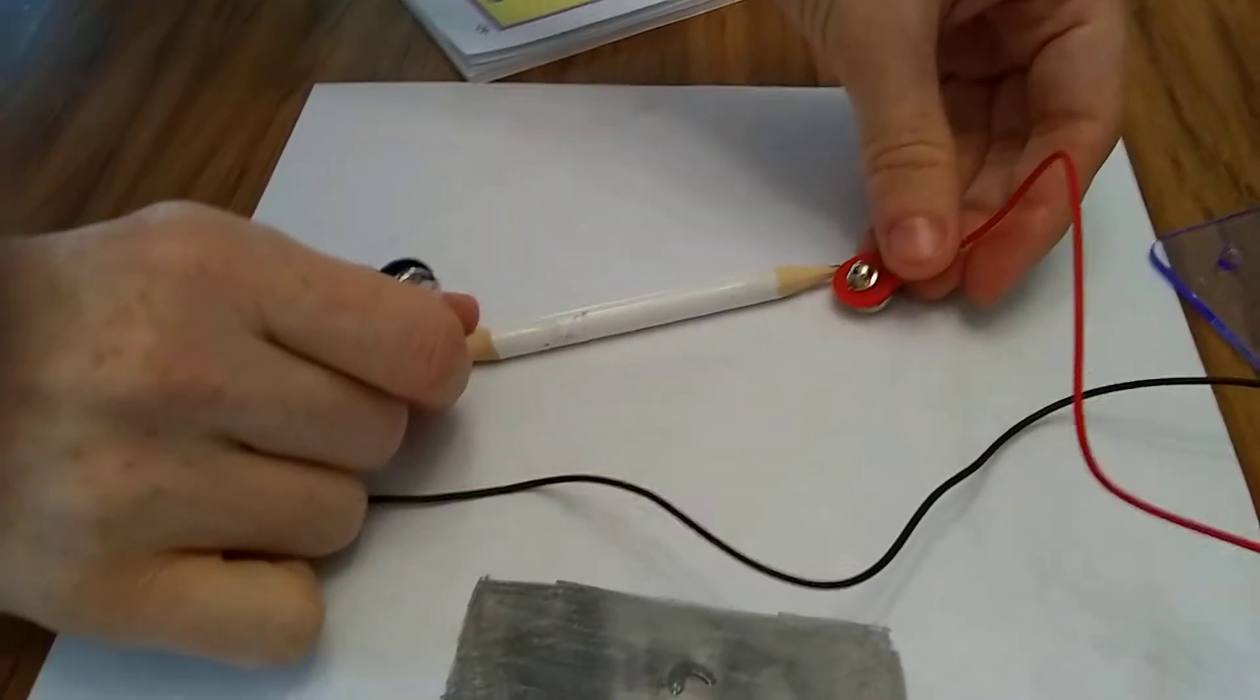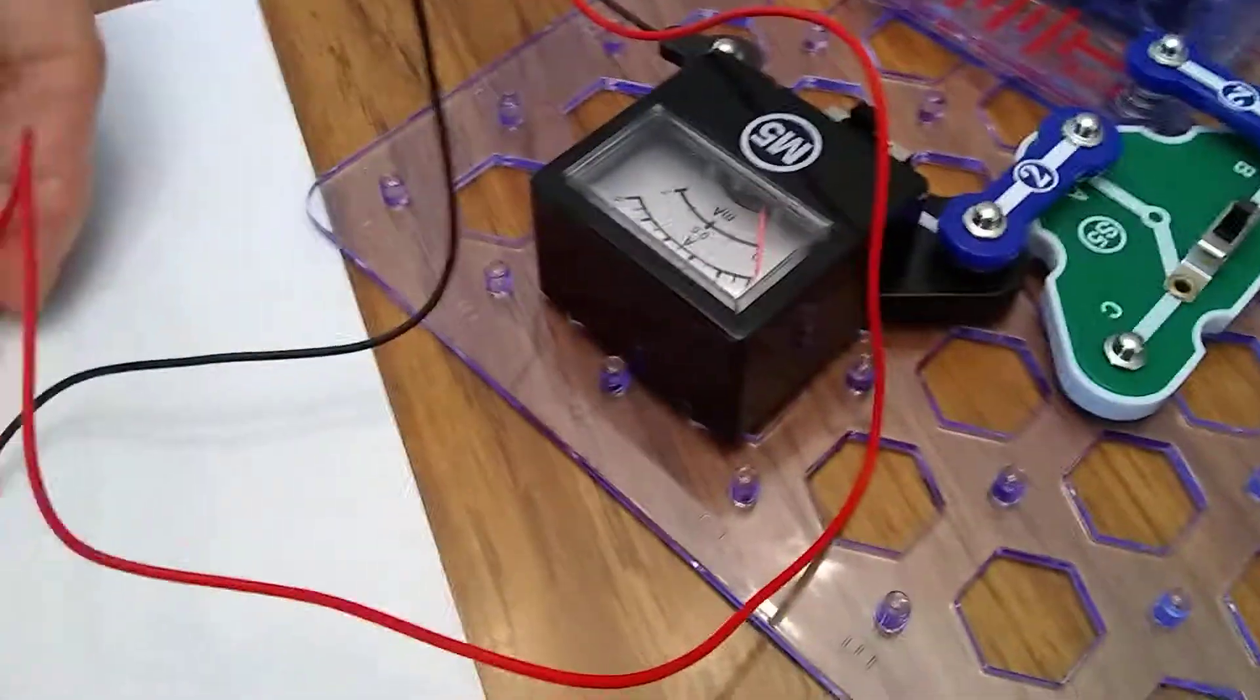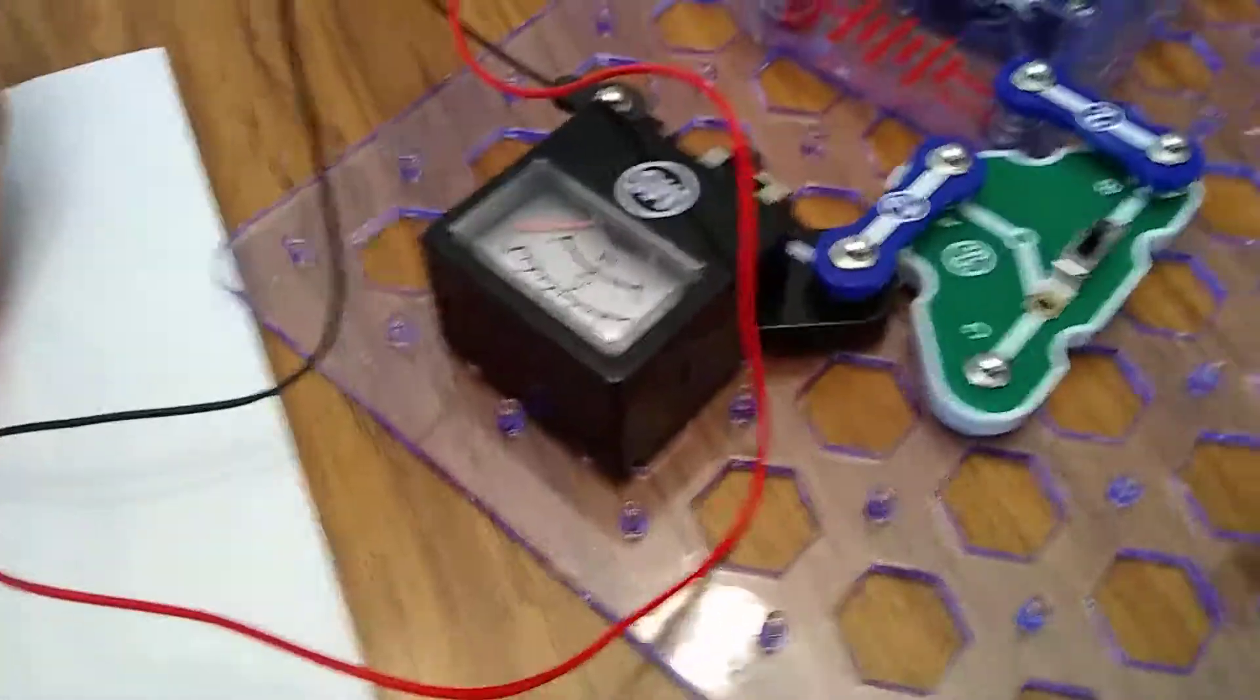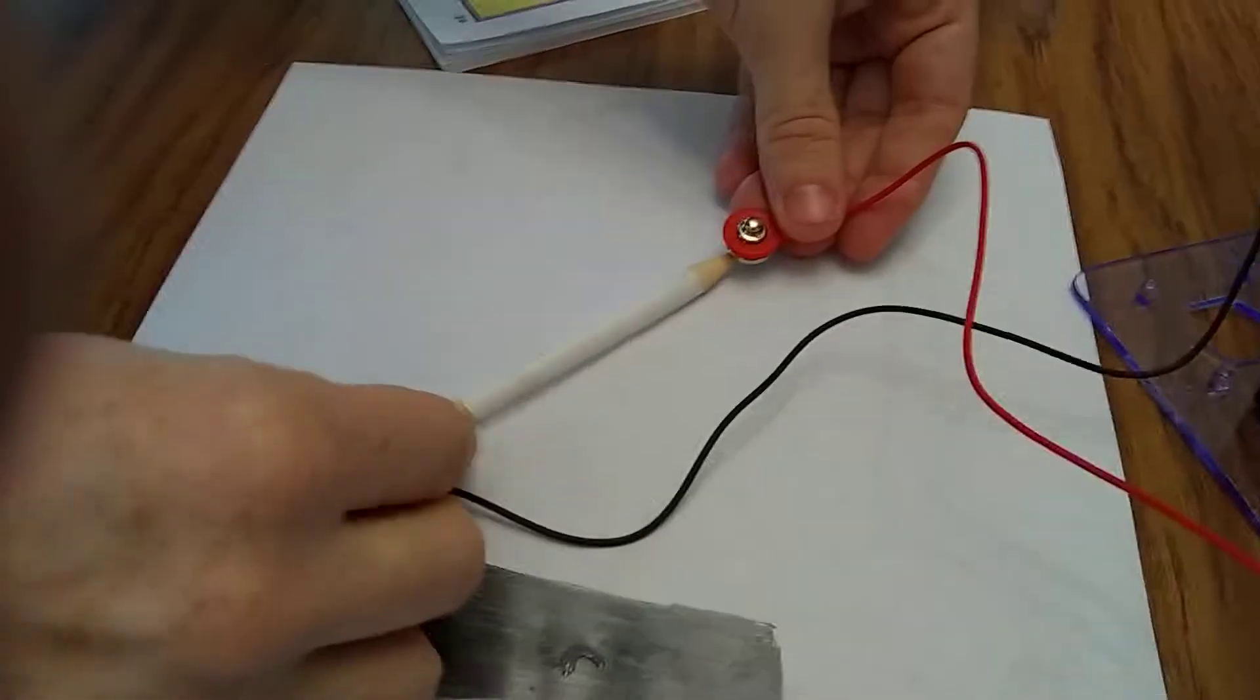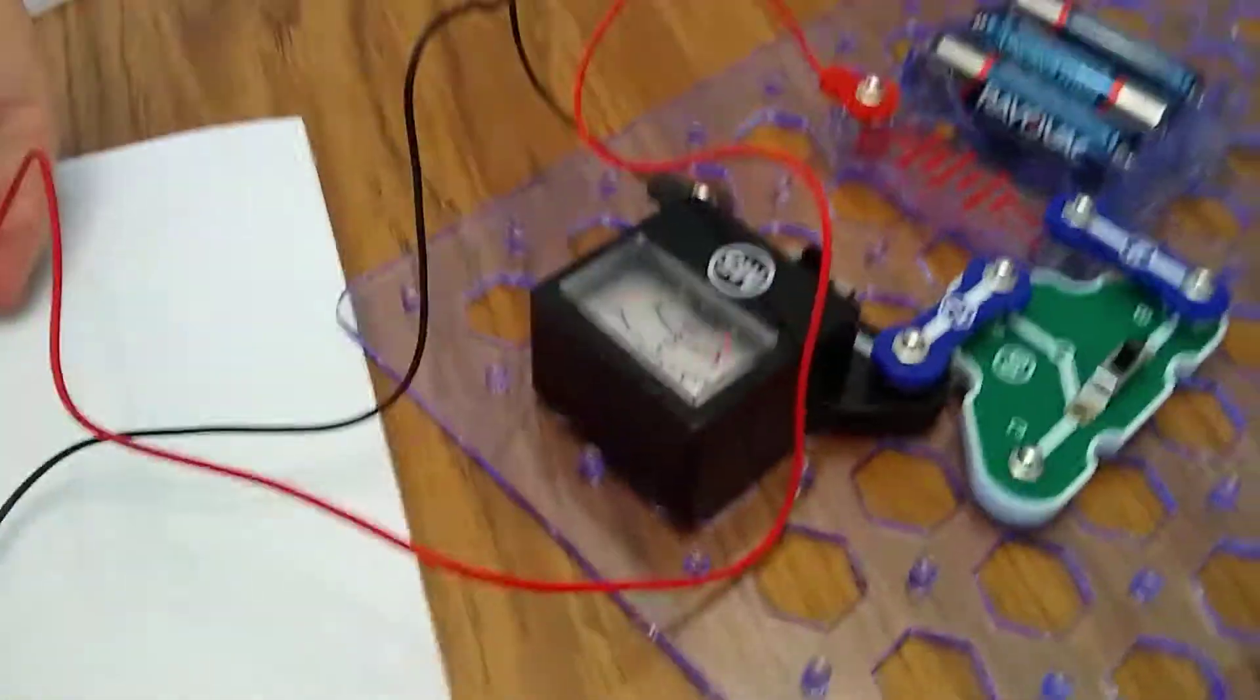Make sure you can see the pencil. Let me see. It's on zero there. Look, Zakiya. Look at the meter.